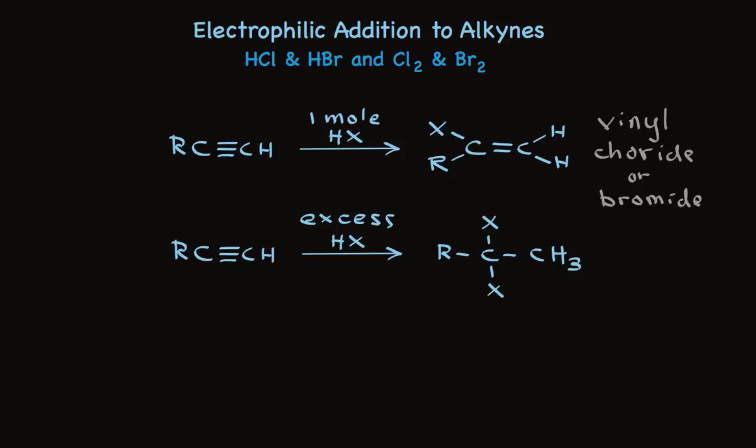If an excess of hydrogen halide is present, the hydrogen halide adds twice, first to make the vinyl halide, and then the vinyl halide, acting as an alkene, adds another mole.